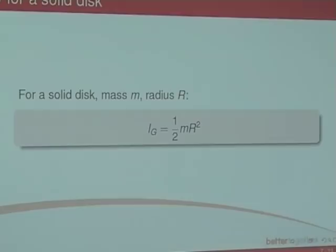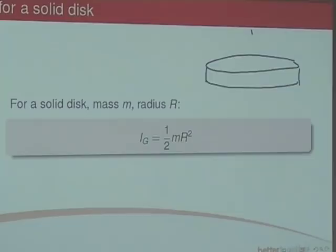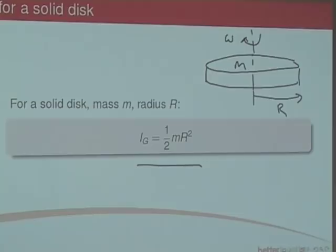For a solid disk with mass M and radius R, the moment of inertia is ½MR². The disk spins about an axis through its centre. R is the radius and M is the mass, so the moment of inertia is ½MR².